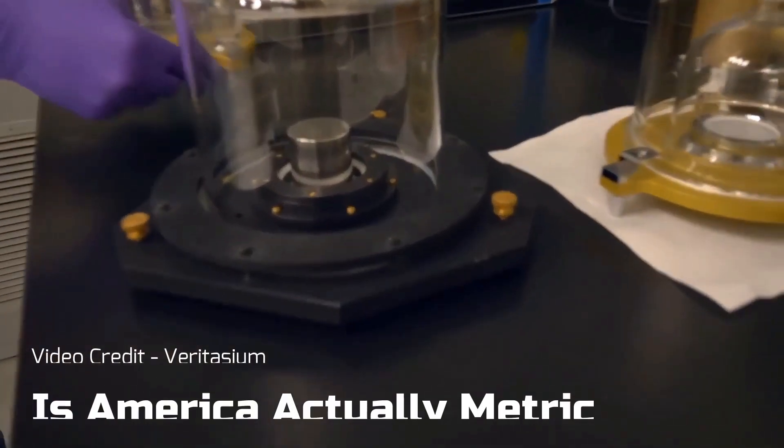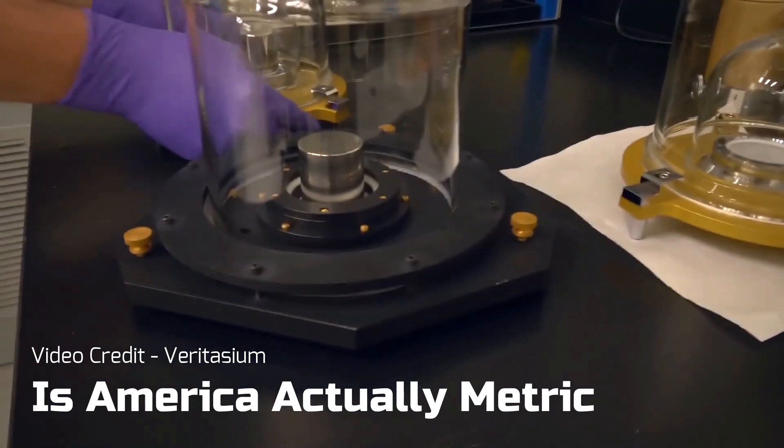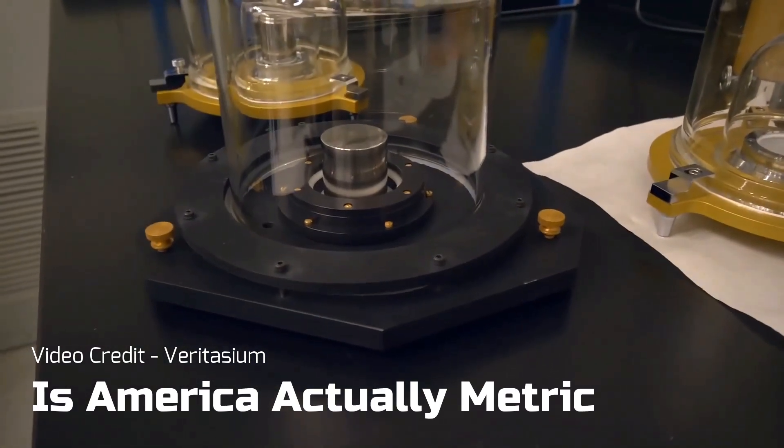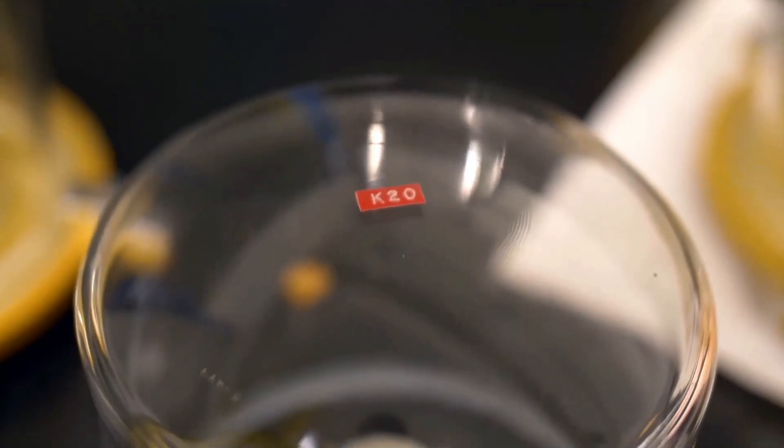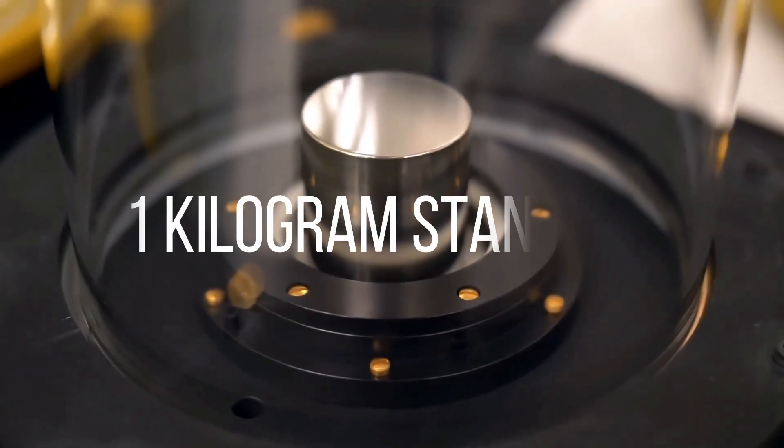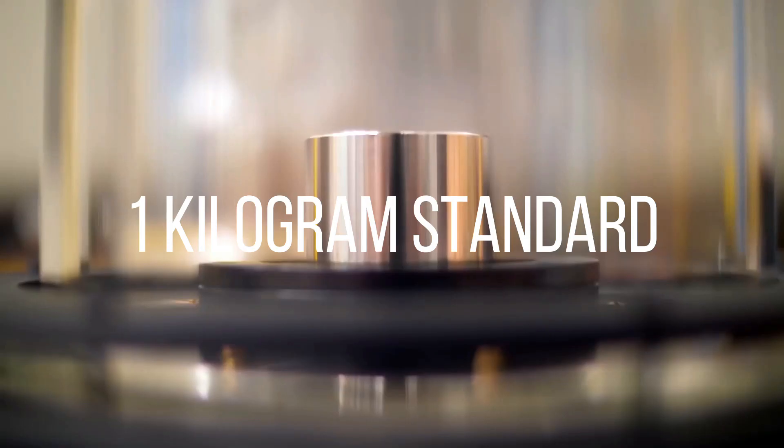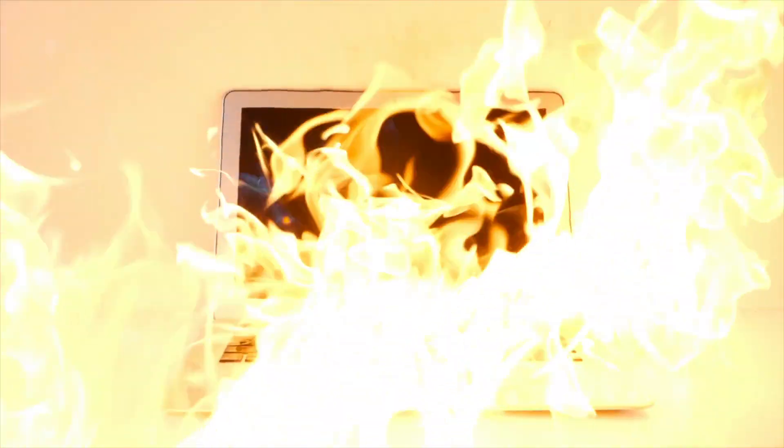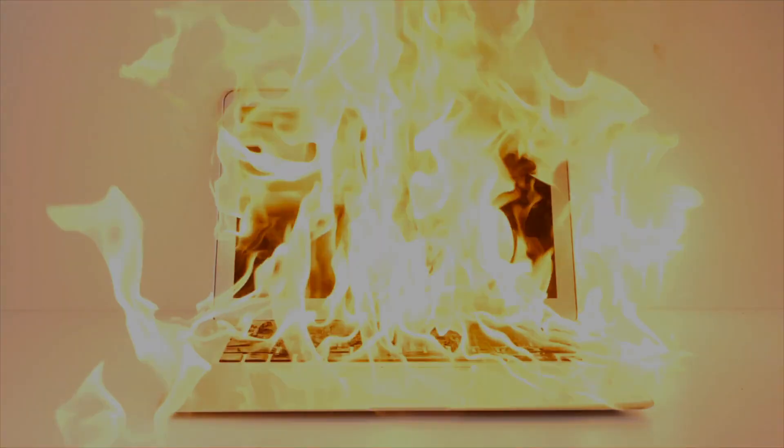One last thing if you haven't given up already, the United States runs on the metric system. In the video 'Is America actually metric?' Veritasium explains that the United States actually bases all of its calibrators to the metric scale. It then has to use conversions to get to the Imperial scale. Now, I think I've proven my point. The Imperial system is very flawed at its core.